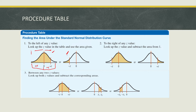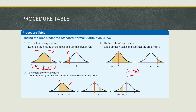For the area to the right of the z value, look up the z value in the table and subtract the area from 1. That is: 1 minus the area of the z value. For the area between two z values, look up both z values and subtract the corresponding areas — the larger area minus the smaller area, going from z2 minus z1.